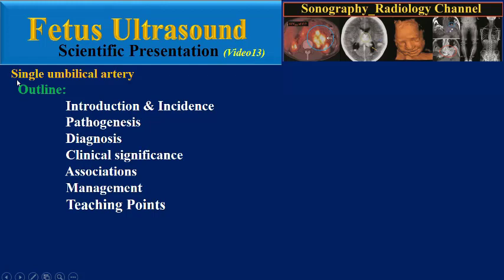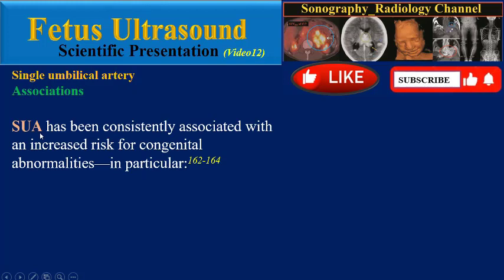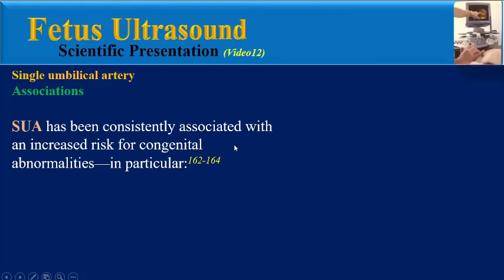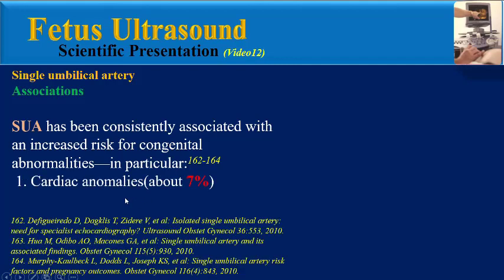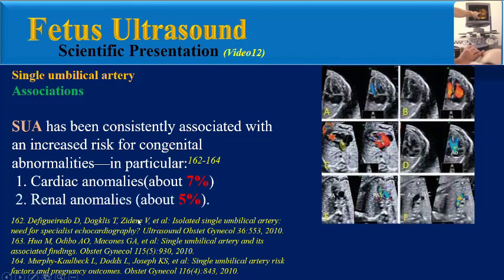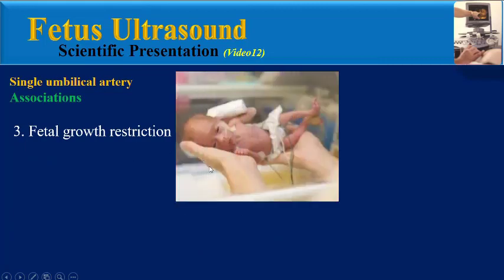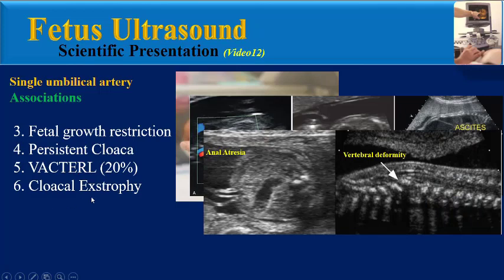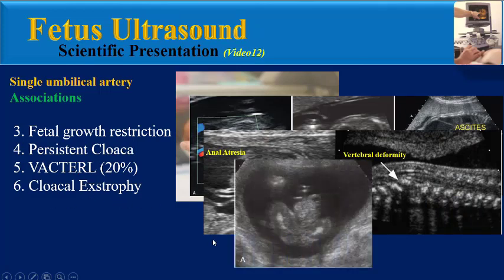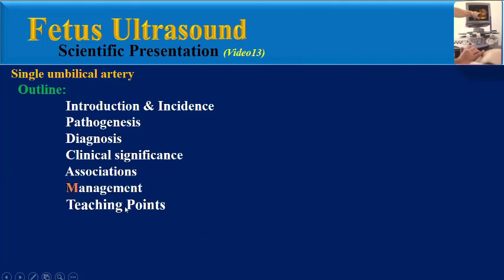Which fetal abnormalities are associated with single umbilical artery? Single umbilical artery has been consistently associated with an increased risk for congenital abnormalities, in particular cardiac anomalies (about seven percent) and renal anomalies (about five percent). Other associations include fetal growth restriction, persistent cloaca, VACTERL syndrome, cloacal or bladder exstrophy, and sirenomelia.